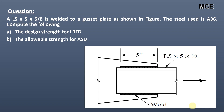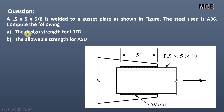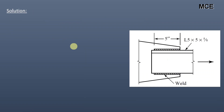Hello and welcome to Master Civil Engineering. This question is about welded connections in which we have to determine the design and allowable tensile strength. The question states that L5×5×5/8 is welded to a gusset plate as shown in the figure. The steel used is A36. We need to compute the design strength for LRFD and the allowable strength for ASD.